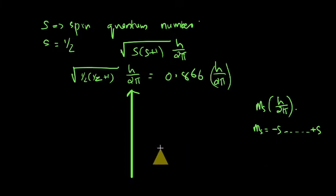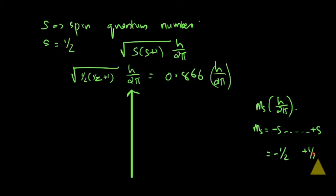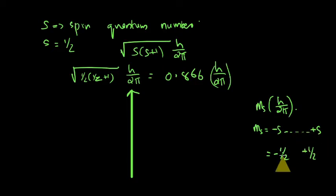In the case of an electron, the spin angular momentum is 0.866 h/2π, so the component should be from minus s to plus s. For the electron, minus s is minus one-half because s equals one-half; so ms equals minus one-half to plus one-half, with a difference of 1. So we have only two values: minus one-half, then minus one-half plus one, which equals plus one-half. These are the two values of ms in the case of an electron.